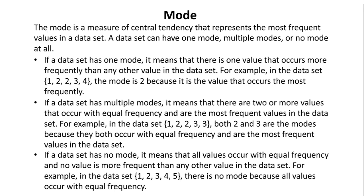If a data set has multiple modes, it means that there are two or more values that occur with equal frequency and are the most frequent values in the data set. For example, in the data set 1, 2, 2, 3, 3, both 2 and 3 are the modes because they both occur with equal frequency and are the most frequent values in the data set. If a data set has no mode, it means that all values occur with equal frequency and no value is more frequent than any other. For example, in the data set 1, 2, 3, 4, 5, there is no mode because all values occur with equal frequency.